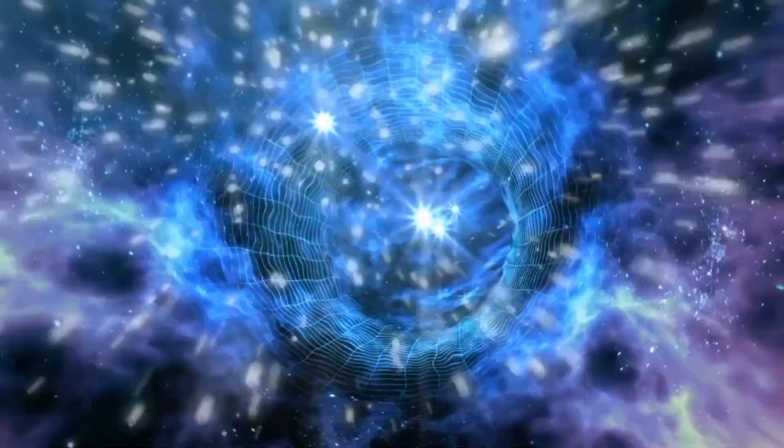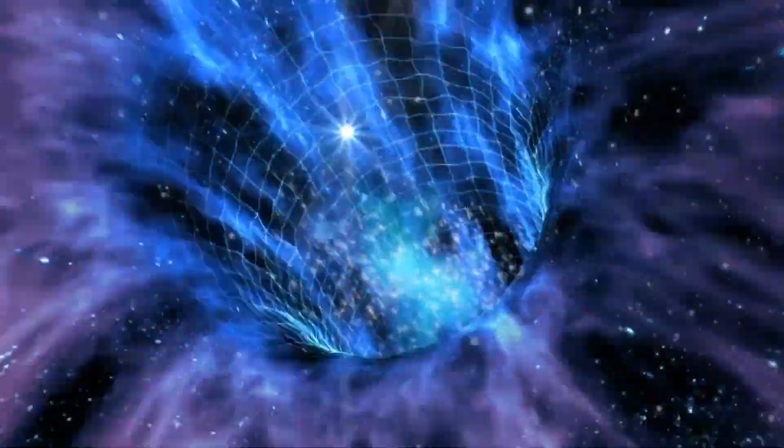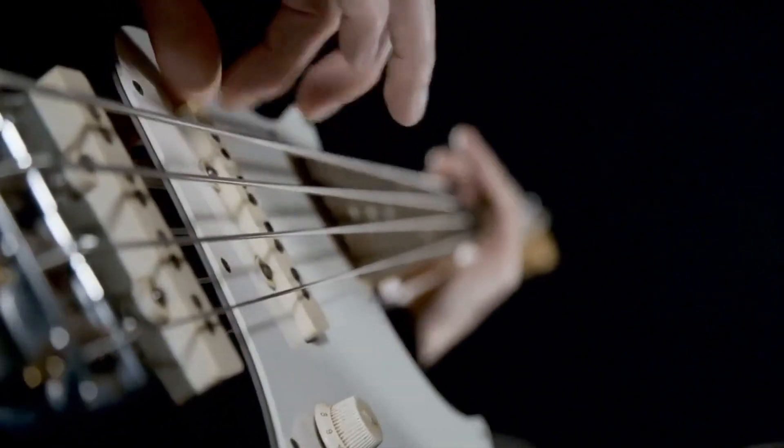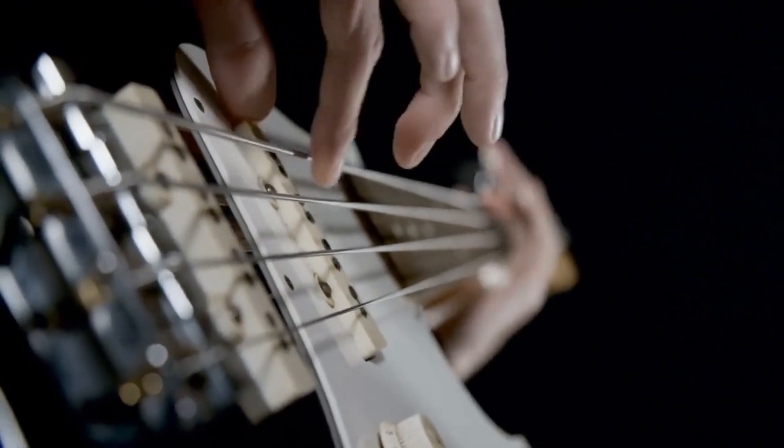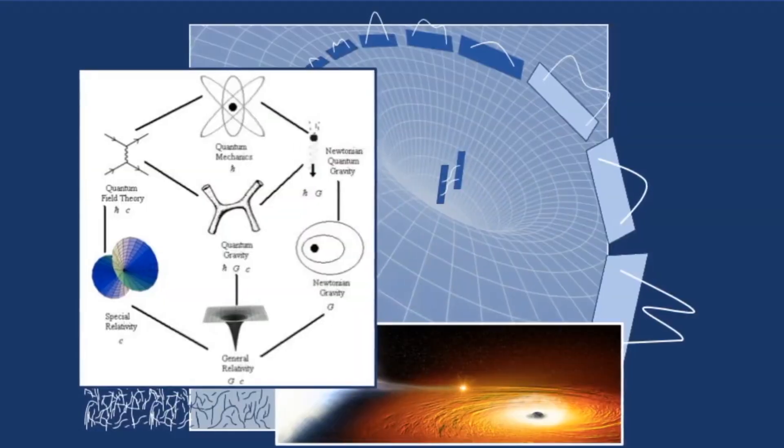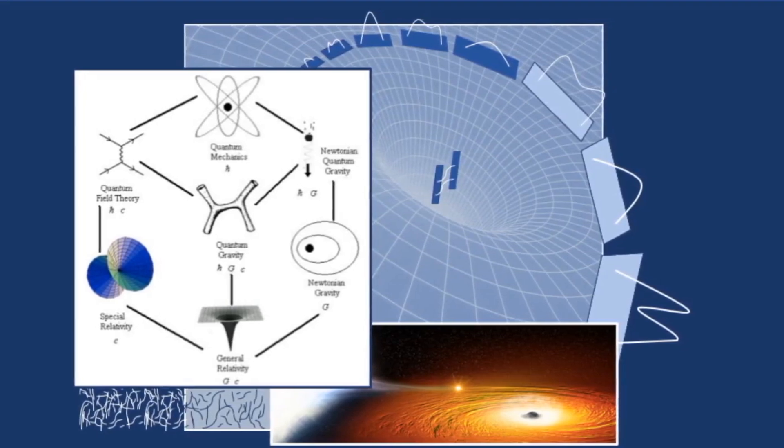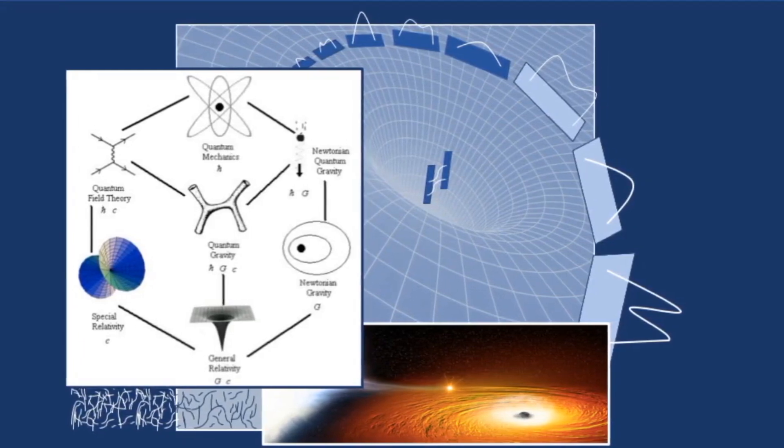String theory represents a radical departure from the particle-centric view of quantum field theory. In string theory, the fundamental constituents of the universe are not point-like particles but rather one-dimensional strings. These strings vibrate at different frequencies, akin to the harmonics of a vibrating guitar string, giving rise to a diverse spectrum of particles observed in nature. The revolutionary aspect of string theory lies in its potential to unify all fundamental forces, including gravity, within a single theoretical framework.